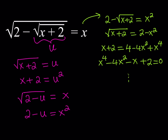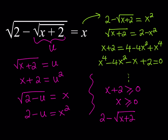Let's talk about the domain of this function — what are some possible x values. Obviously x plus 2 needs to be greater than or equal to 0, otherwise it's not going to be a real number. And x also needs to be greater than or equal to 0, because it's a square root of something. And last but not least, 2 minus the square root of x plus 2, which is the expression inside the outer radical, also needs to be greater than or equal to 0. So we have to look at it as a system of inequalities and find the intersection.